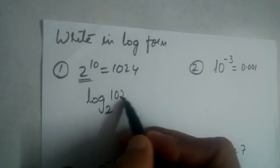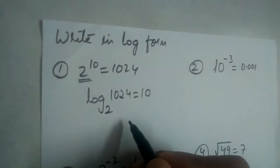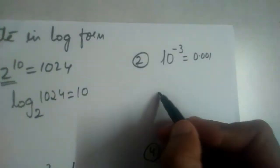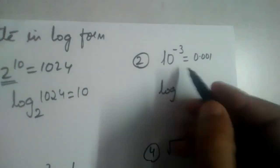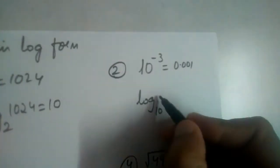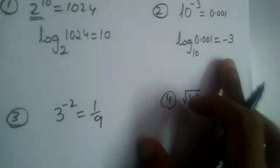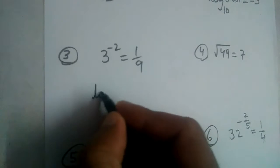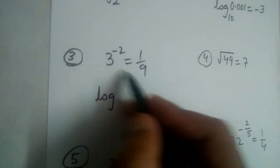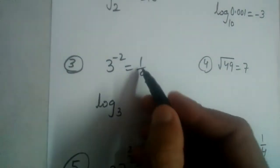This one, log base 10 is base here, and the number should come here. 0.01 power should be is equal to minus 3. And here log base 3, so 3 here, 1 by 9 is equal to minus 2.